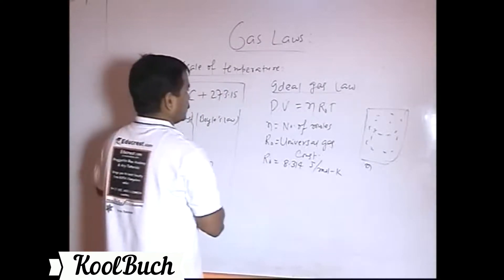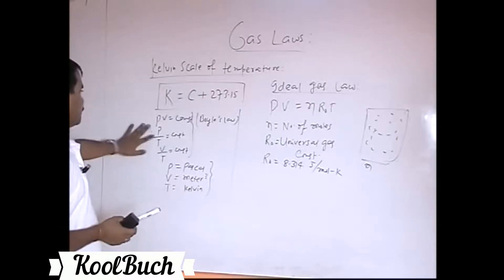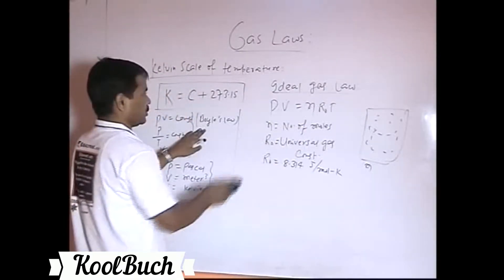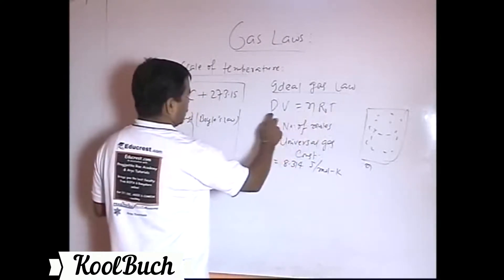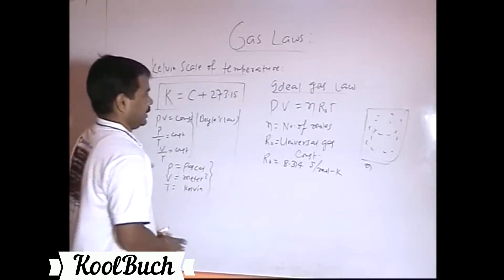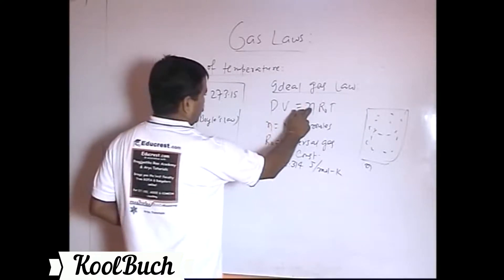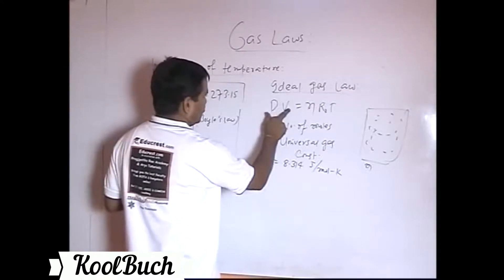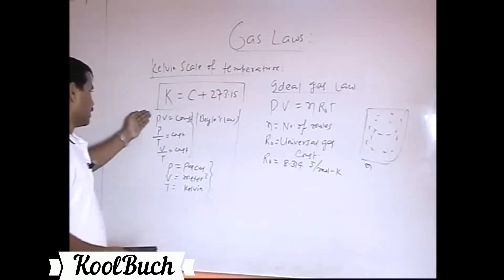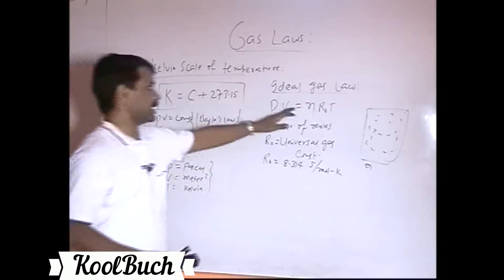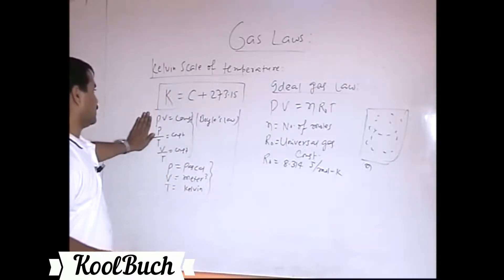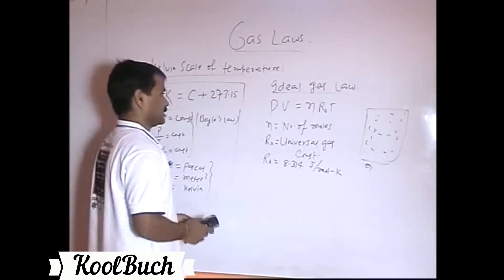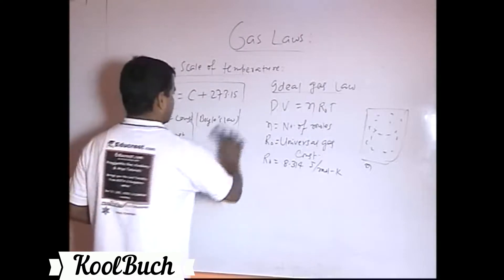Knowing this ideal gas law makes it very easy to derive any of the individual gas laws. For example, to derive Boyle's Law: when temperature is constant, PV becomes constant — exactly what Boyle's Law states. When pressure is constant, V is directly proportional to T. When volume is constant, P is directly proportional to T. So the ideal gas law is a superposition of all these gas laws, applicable for all ideal gases.